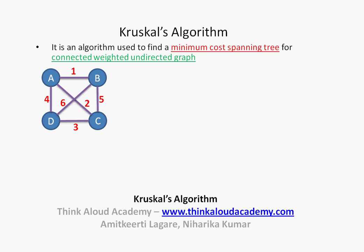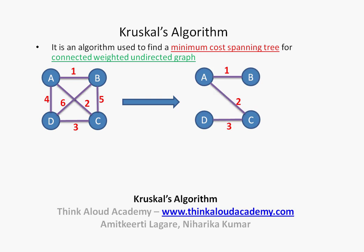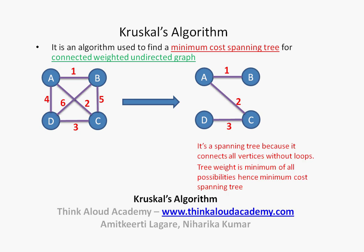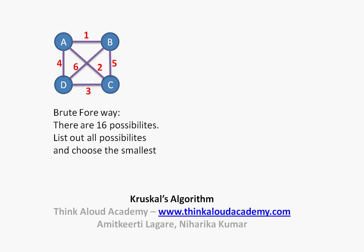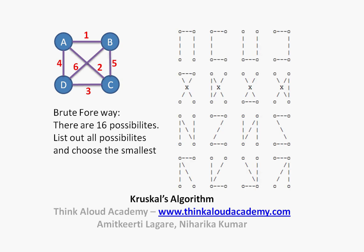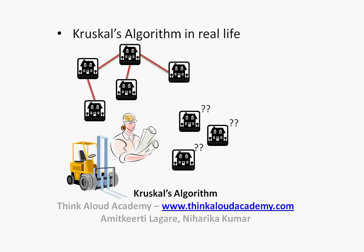AB length is the same as BA, or BC length is the same as CB. Our aim in Kruskal's algorithm is to start from this figure and obtain a minimum cost spanning tree. A spanning tree connects all the vertices through one edge with no loops. This is a minimum cost spanning tree because the weight of this particular tree is the minimum. Using a brute force approach, we would get 16 different possibilities of spanning trees, and choosing the minimum weight one gives us this particular instance.